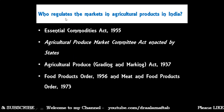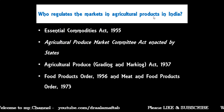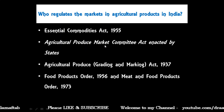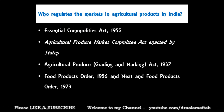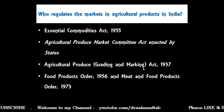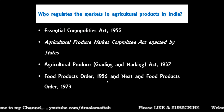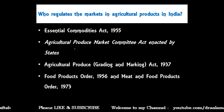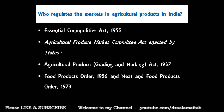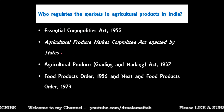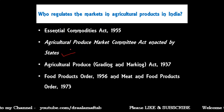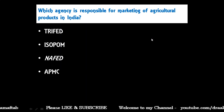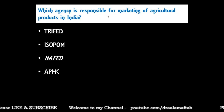Who regulates the markets in agriculture products in India? The options include Essential Commodities Act 1955, Agriculture Produce Market Committee Act enacted by states, Agriculture Produce Grading and Marketing Act 1937, Food Products Order 1956, and Meat and Food Products Order 1973. The correct answer is the Agriculture Produce Market Committee Act enacted by states.